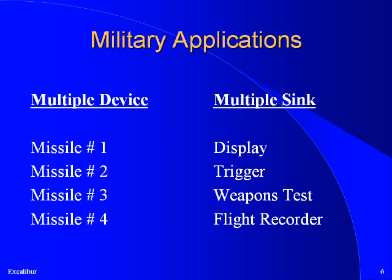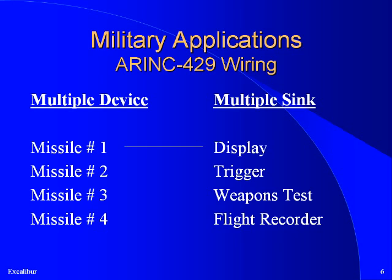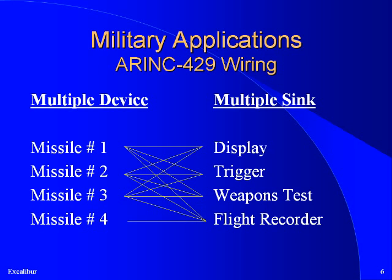Let's look at a military application. A fighter plane is armed with multiple missiles. The pilot needs to know the status of each missile — he needs to be able to check if they are in working order, to see how many are available, and to fire them if necessary. A flight recorder is used to note all activity for later review. So each missile needs to connect to each of the devices used by the pilot to control them. If we used a bus like ARINC 429 to make these connections, even with a fairly simple model, the wires begin to resemble a bowl of spaghetti. As we add missiles and devices, it is easy to see that the wiring would get out of hand very quickly. Another model for communications is therefore necessary.